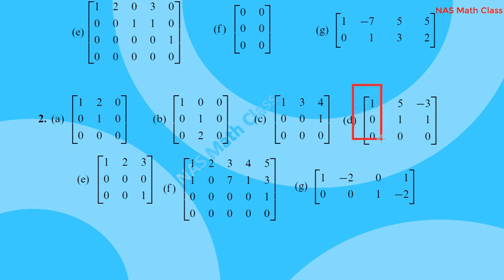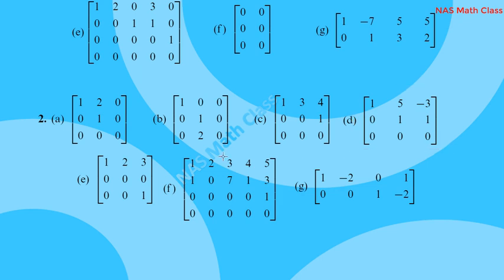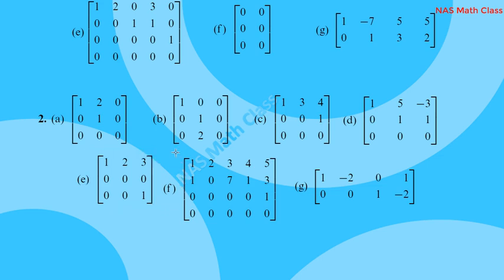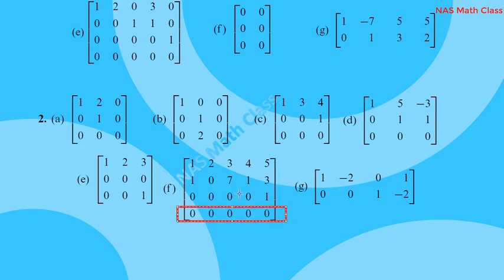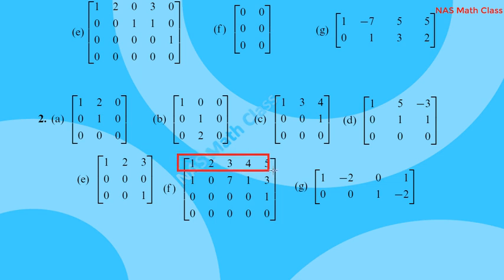This is row echelon form but not reduced row echelon form. To check: after confirming zero rows are below non-zero rows, we check that the first element of each non-zero row is a leading one, and that each leading one appears above zeros in its column.